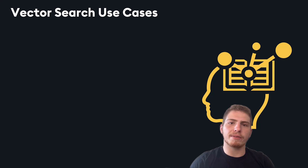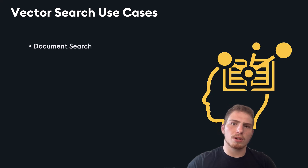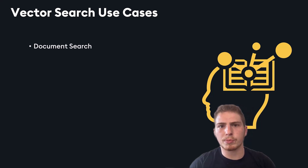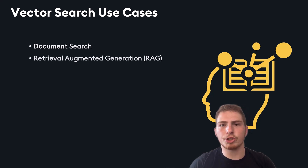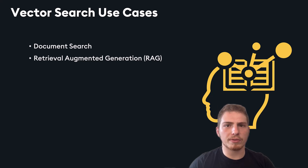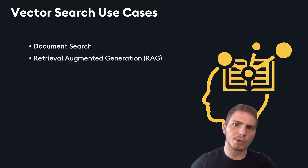Vector search has a wide variety of use cases. What's exciting is that it allows you to create search systems that were inaccessible outside of big companies until a couple of years ago. An obvious use case is document search: by embedding both your query and your documents — likely split into chunks or sections beforehand — it's very straightforward to build a document search system. Another common use case is retrieval augmented generation, or RAG, which is the idea of grounding an LLM with relevant data. For every user query, you search your knowledge base and insert relevant data into the LLM context to ensure it doesn't hallucinate and has all the information it needs.